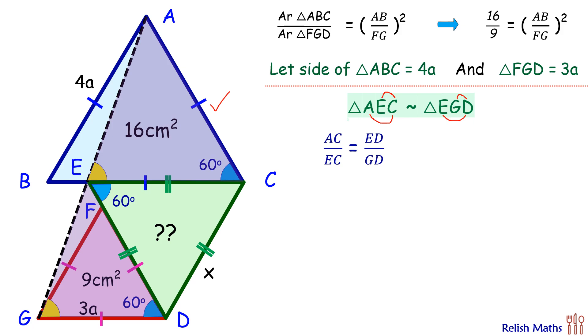Putting the values: AC is 4a, and EC is x, so 4a upon x equals ED, which is x, and GD is 3a. So we are getting 4a upon x equals x upon 3a. Solving it, x² = 12a², and x is √12a.